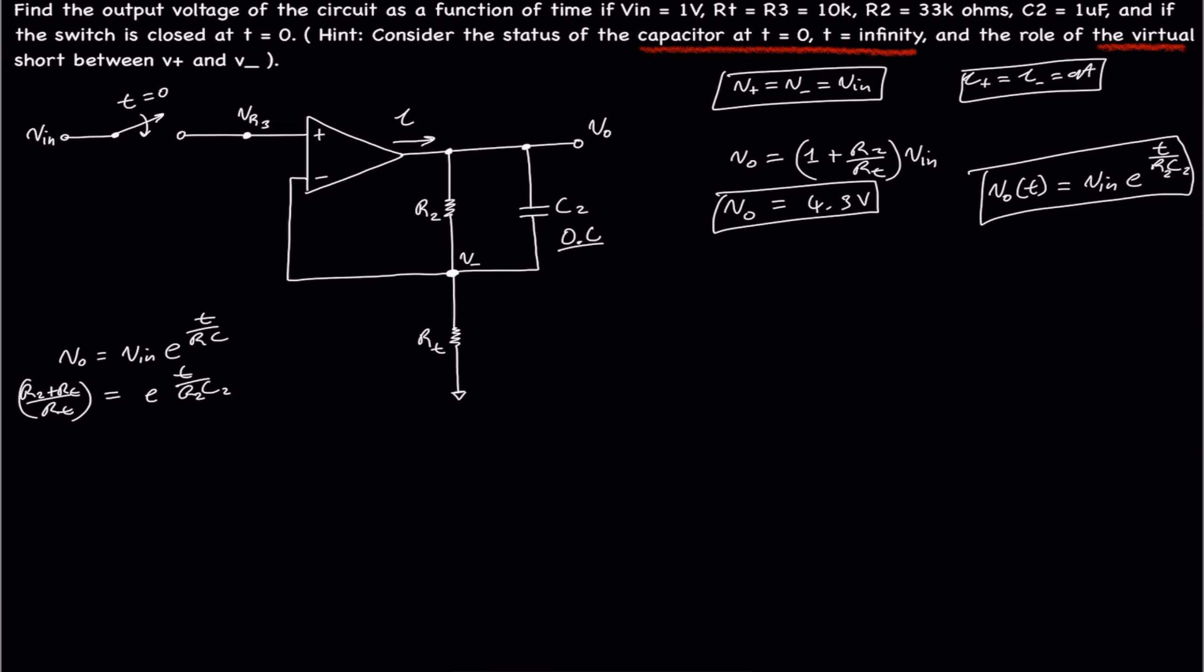We see this R2, C2. We know that the voltage gain for a non-inverting op-amp is RT plus R2 divided by RT. Looking at that, we see that the voltage gain is 4.3.